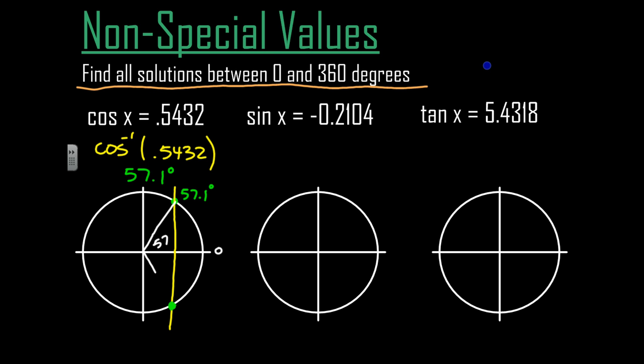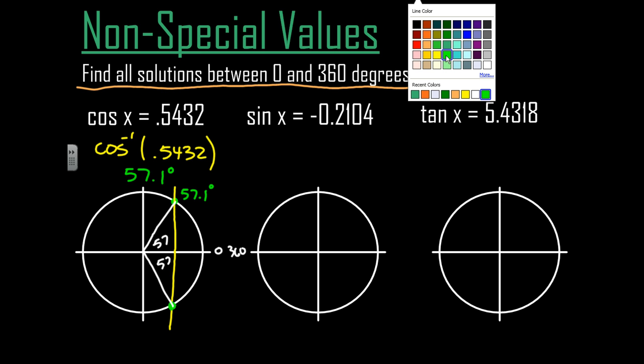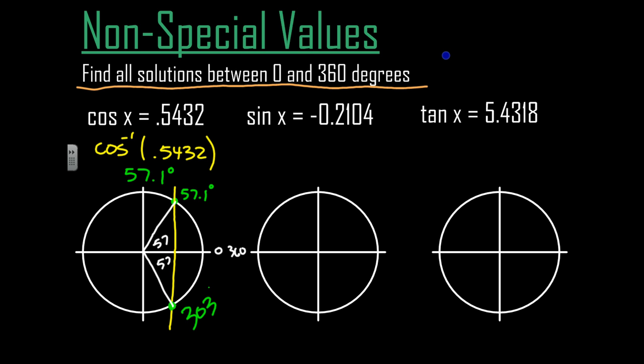So down here is going to be 57 degrees back from the horizontal as well, but we're going to go back from 360 degrees. So we're going 57 back from 360, which gives me a value of 303 degrees. Actually, I went to the nearest tenth, so really it's not 303, it's going to be 302.9. Those are the two values in degrees where the cosine of those two values is equal to 0.5432.